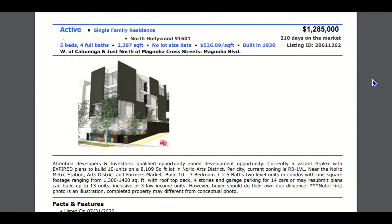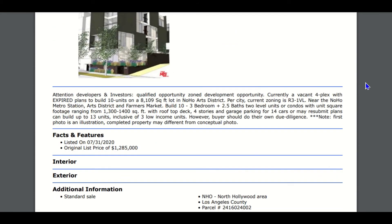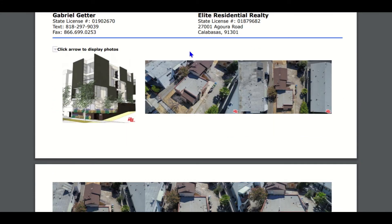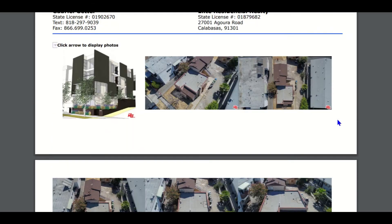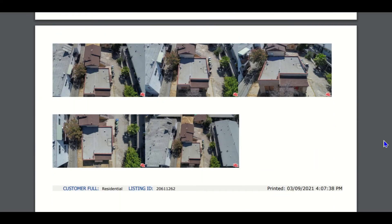With the TOC you can submit new plans and get as many as 18 units on this site, with two to four affordable units included — that's an extra four units compared to the existing 10-unit plan. Here are some site pictures and the renderings they have.